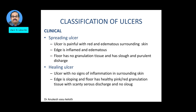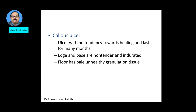The spreading ulcer has no granulation tissue on the floor, with slough and purulent discharge. The healing ulcer has no signs of inflammation in the surrounding skin; the edge is sloping and the floor has healthy pink and red granulation tissue with very little serous discharge and no slough. The non-healing or callous ulcer has no tendency towards healing, may last many weeks to several months, with non-tender but indurated edge and base, and a pale unhealthy granulation tissue on the floor.